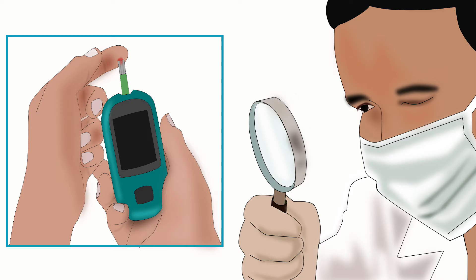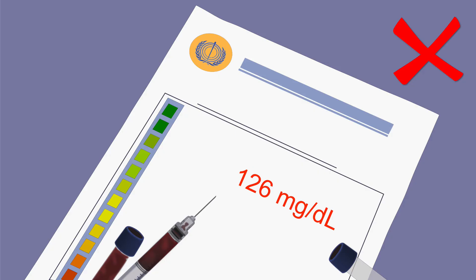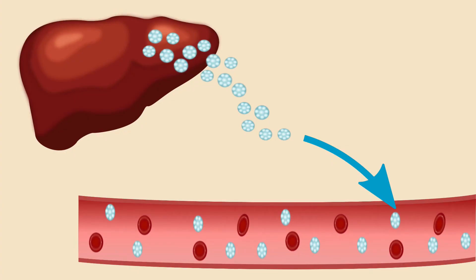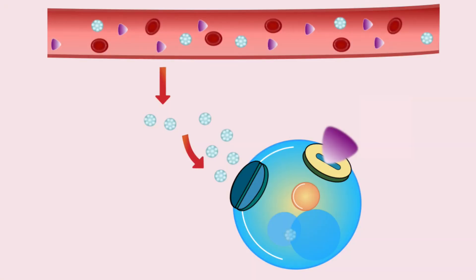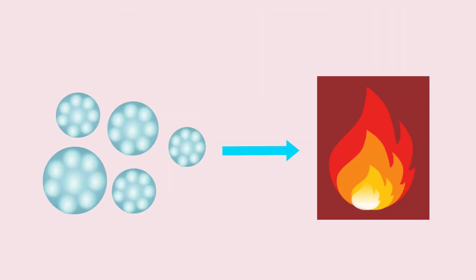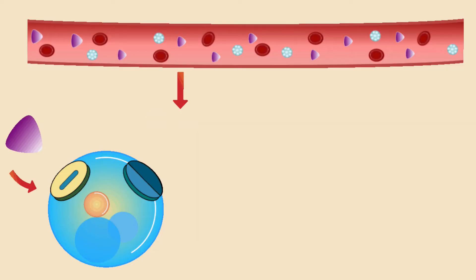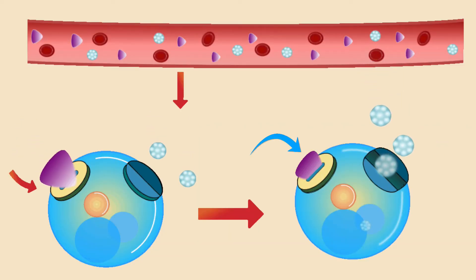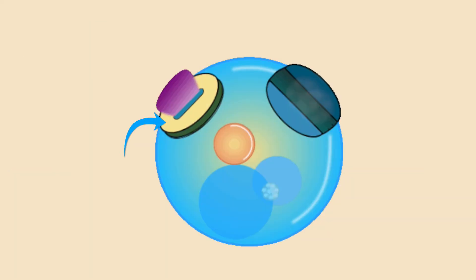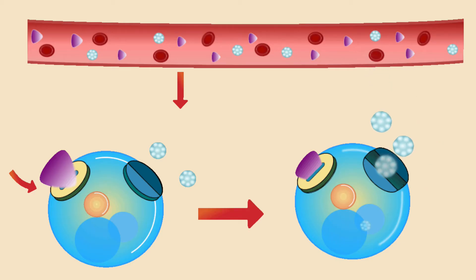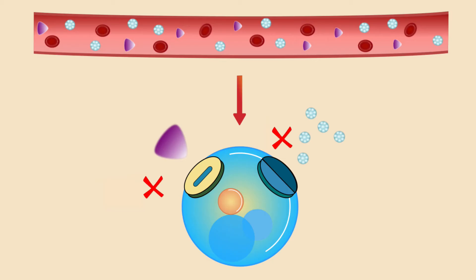Let us understand what the root cause is and define diabetes accordingly. Most of the food we consume is converted into glucose in the body. This glucose enters our bloodstream. Glucose from the blood has to enter the cells to be converted into energy. Cells have membranes that allow the entry and exit of molecules such as glucose. Entry of glucose into the cell requires help from insulin. Insulin sits on the insulin receptors present in the cell membranes. This starts a chain of events which results in glucose entering the cell.